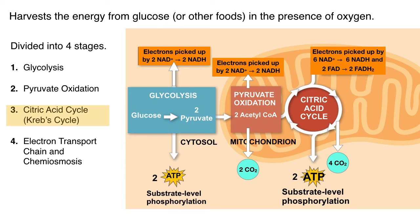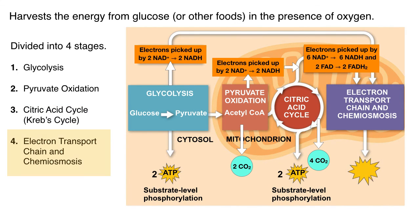The next step is the electron transport chain and chemiosmosis. The electron transport chain occurs in the mitochondria, but unlike the citric acid cycle and pyruvate oxidation — which happen in the matrix — the electron transport chain actually occurs in the membrane of the mitochondria, between the two membranes. Here, a series of steps will use the energy from the electrons carried by NADH and FADH2 to produce 34 ATP by a process called oxidative phosphorylation. During this process, six oxygen molecules are used and water molecules are produced.